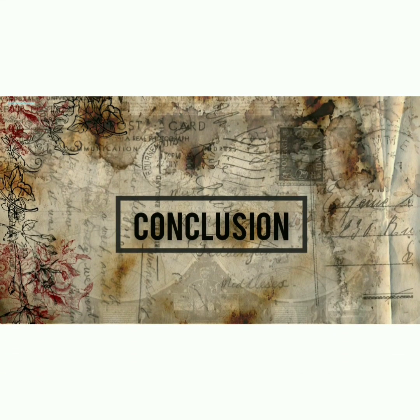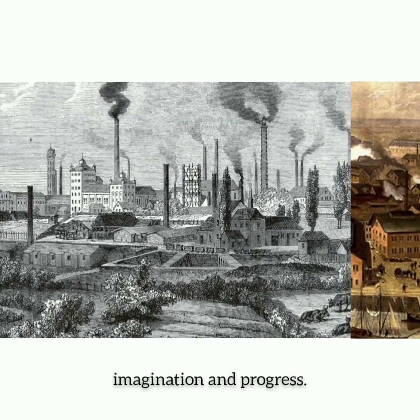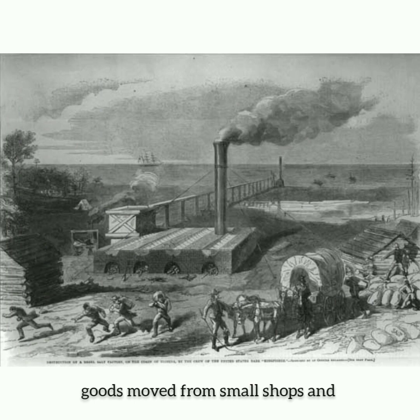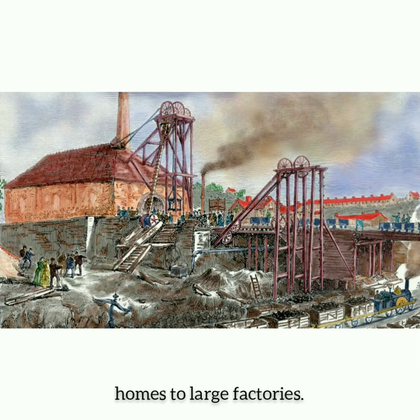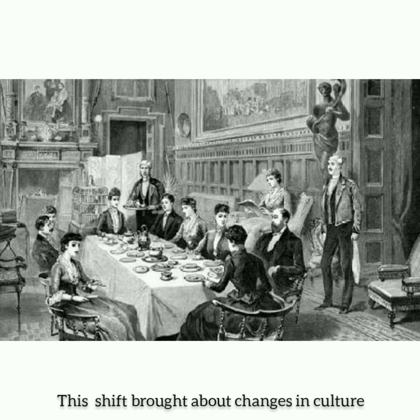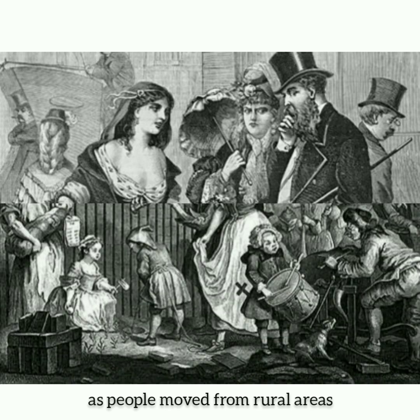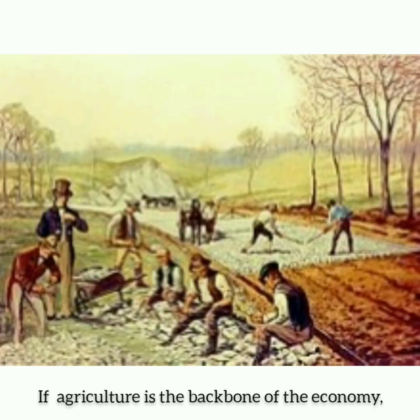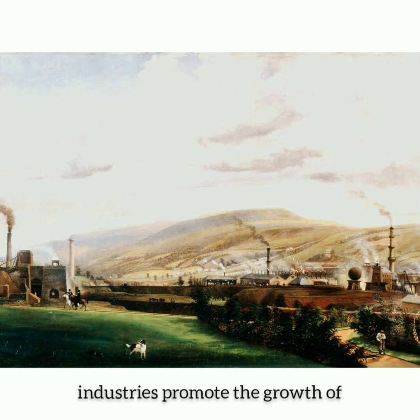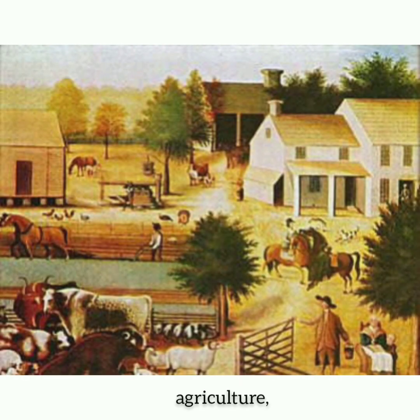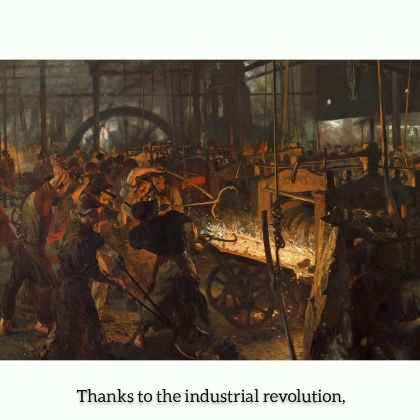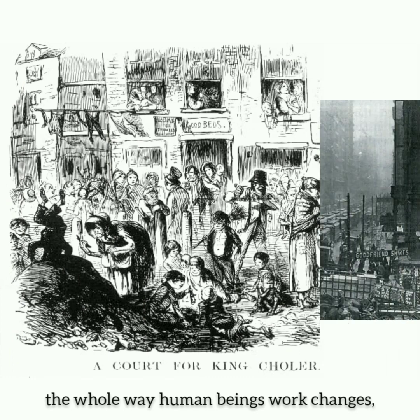In conclusion, the Industrial Revolution was a time of great imagination and progress. It was a time when the manufacturing of goods moved from small shops and homes to large factories. This shift brought about change in culture as people moved from rural areas to big cities in order to work. If agriculture is the backbone of the economy, industry is the energy. The rapid development of industries promoted the growth of agriculture, transportation, and communication. Thanks to the Industrial Revolution, the whole way human beings lived was changed through urbanization.